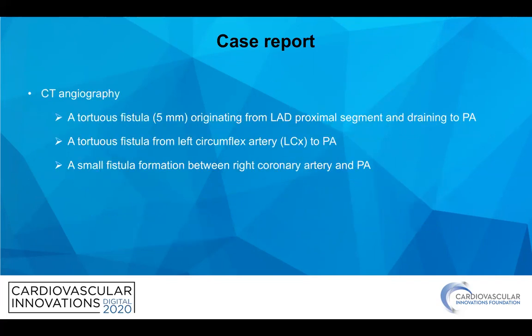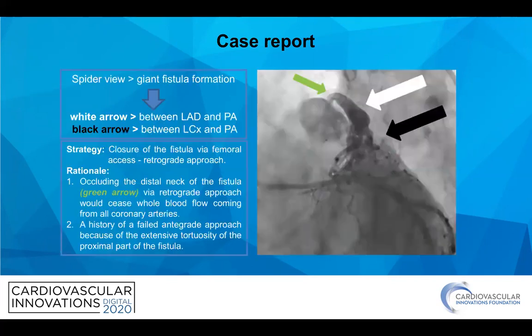CT angiogram clearly demonstrated the complex fistula formation, which was originating from the left anterior descending and left circumflex arteries as well as the right coronary artery, and they were all draining to the pulmonary artery.